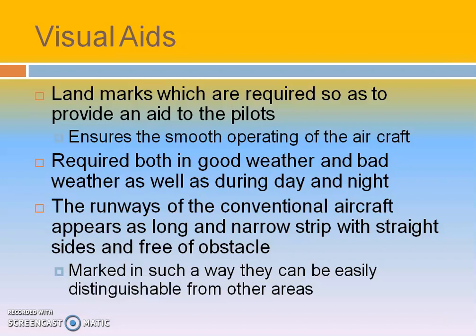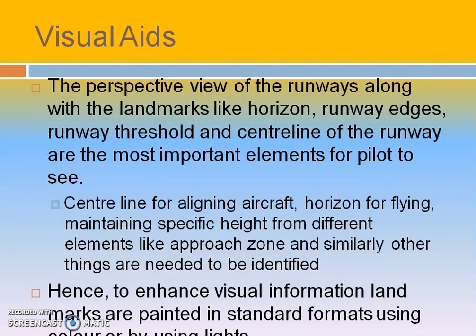Landmarks will usually be provided to help the pilots for careful and safe landing during bad weather and also in good weather, both in the daytime and in the night time. Runways of the conventional airport appear as a long and narrow strip with straight sides. The main places where we have to provide visual aids are at the edges of the runway, in the horizons, threshold of the runway, and center line of the runway. These are the main places which a pilot should be able to view.